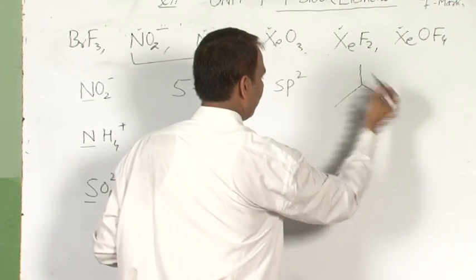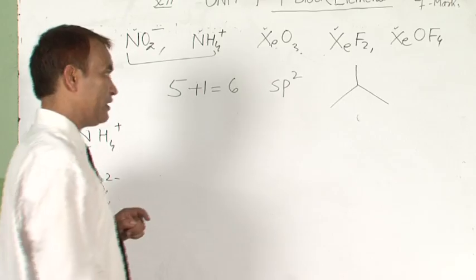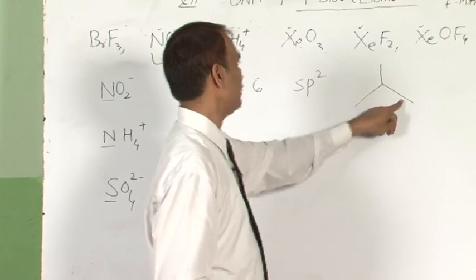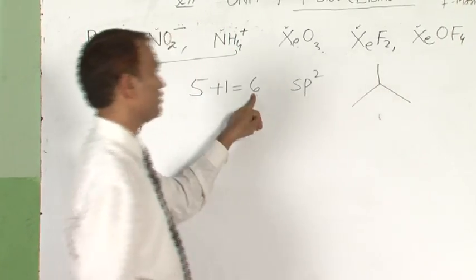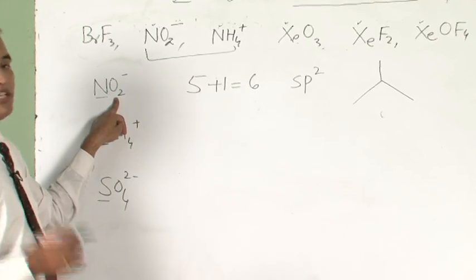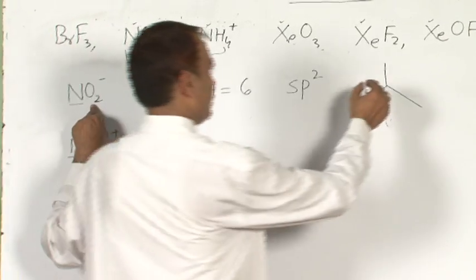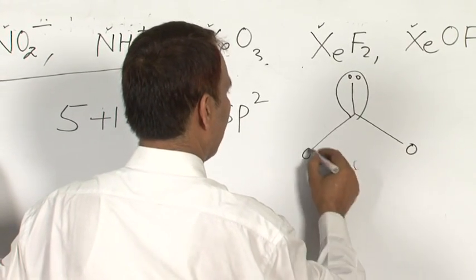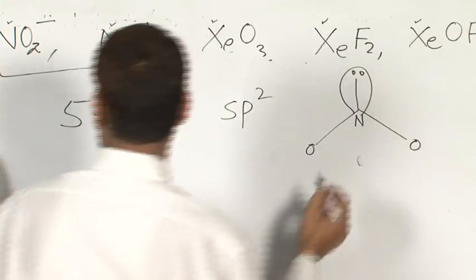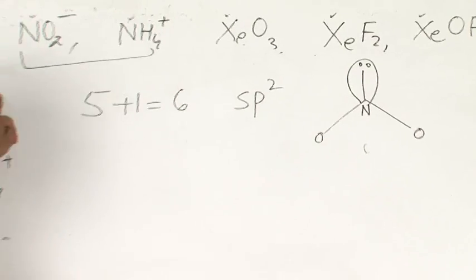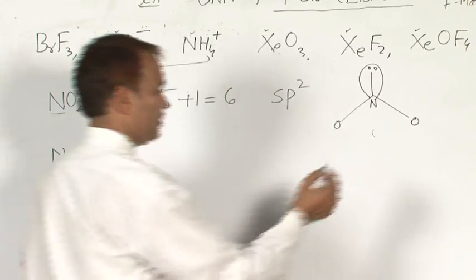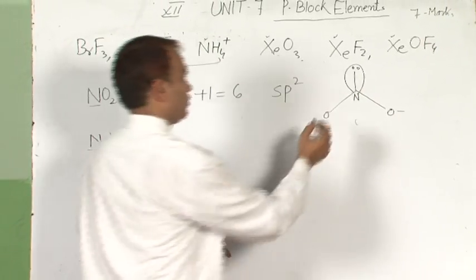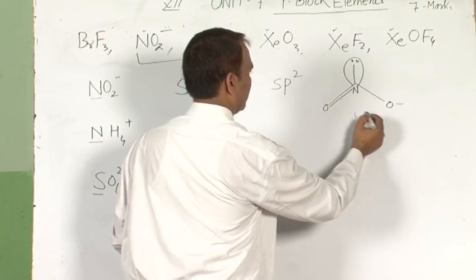If it is sp2, first draw the regular geometry — it is planar. But see the bonding atoms: it should be 3, and half of 6 is 3, but here is only 2. It means there is one lone pair. Put the position of the lone pair here. Then oxygen here, oxygen here, central atom here. If there is a negative charge, put the negative charge on the oxygen atom — one negative charge on one oxygen. The other has no charge, so it will be double bonded. Now it is bent.